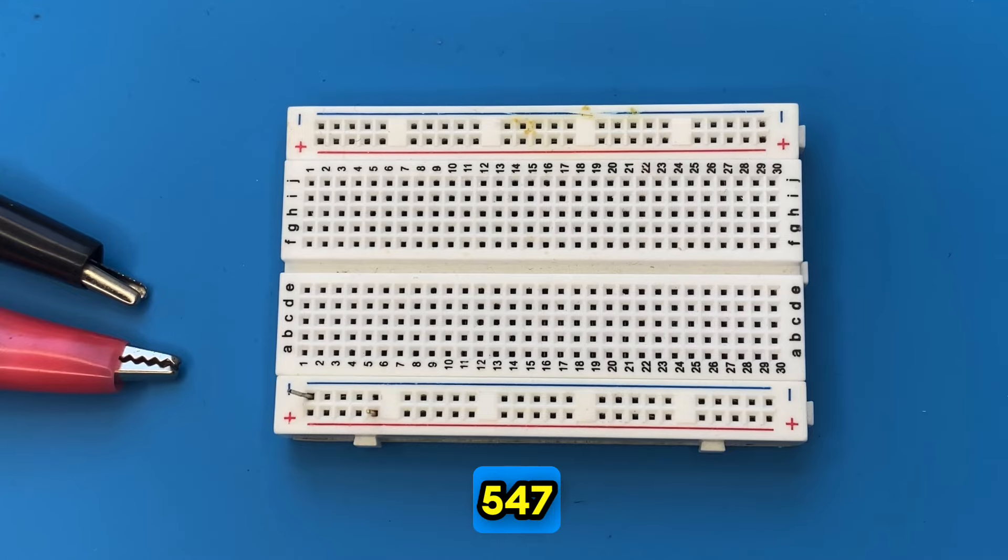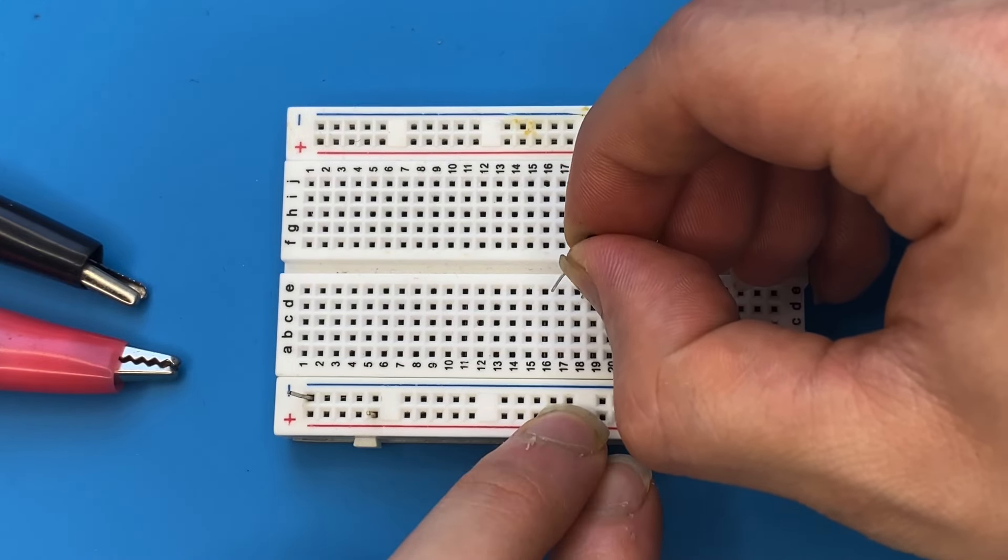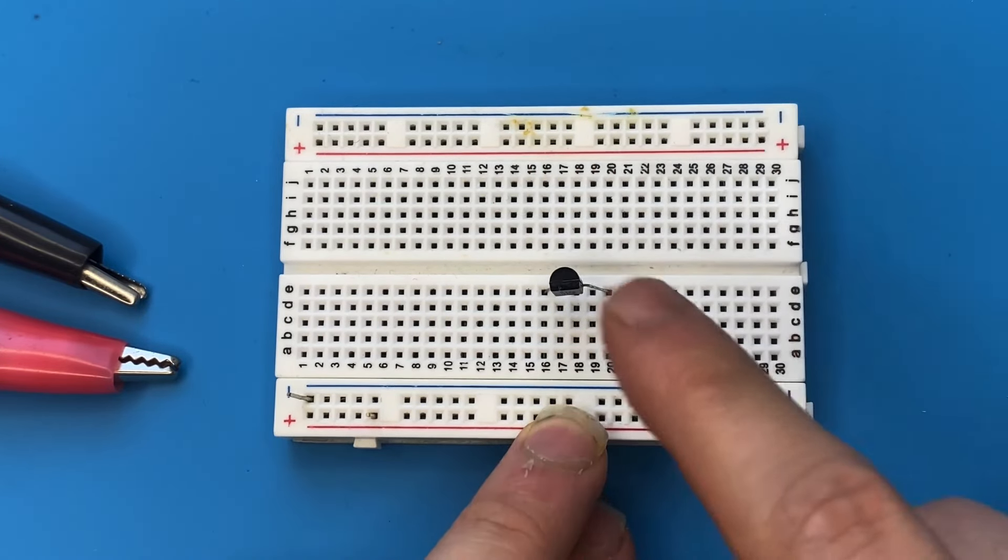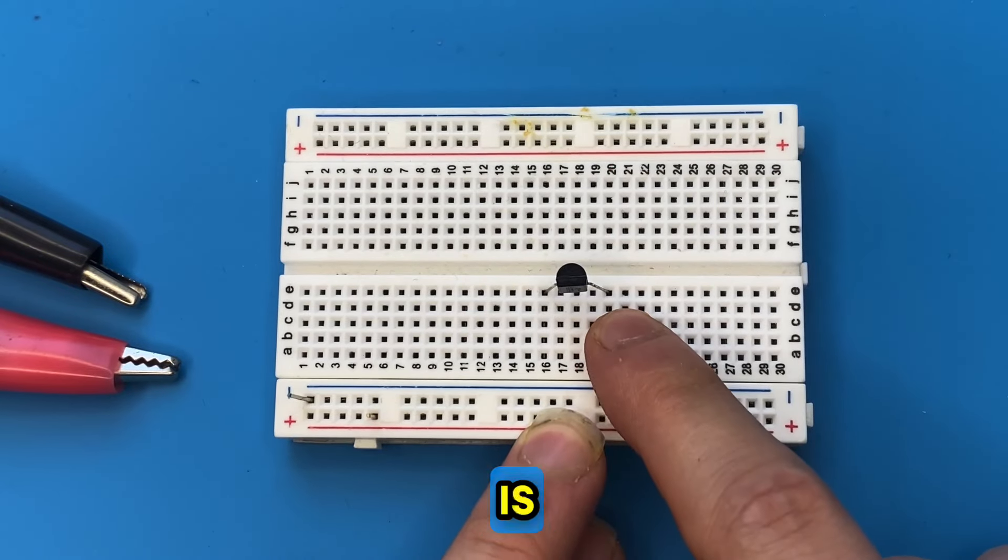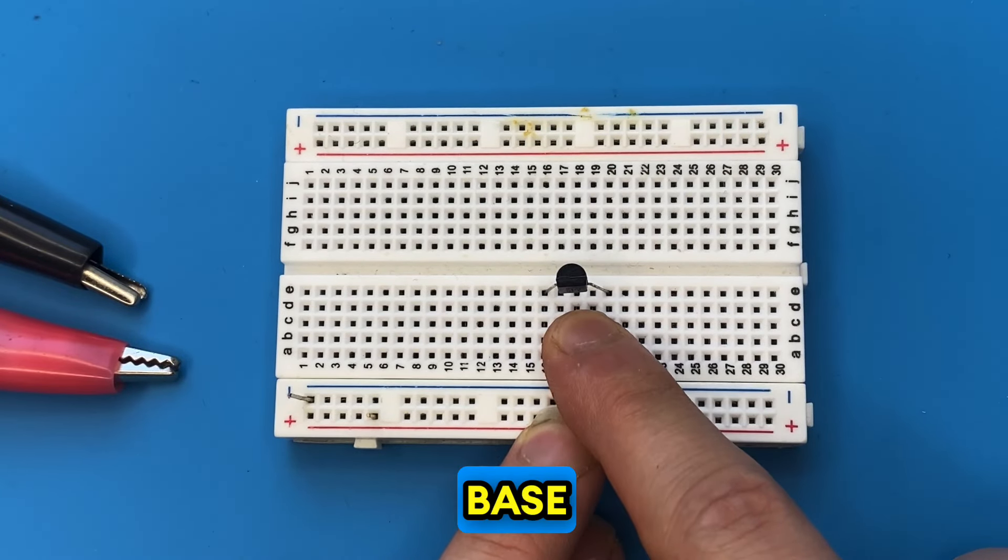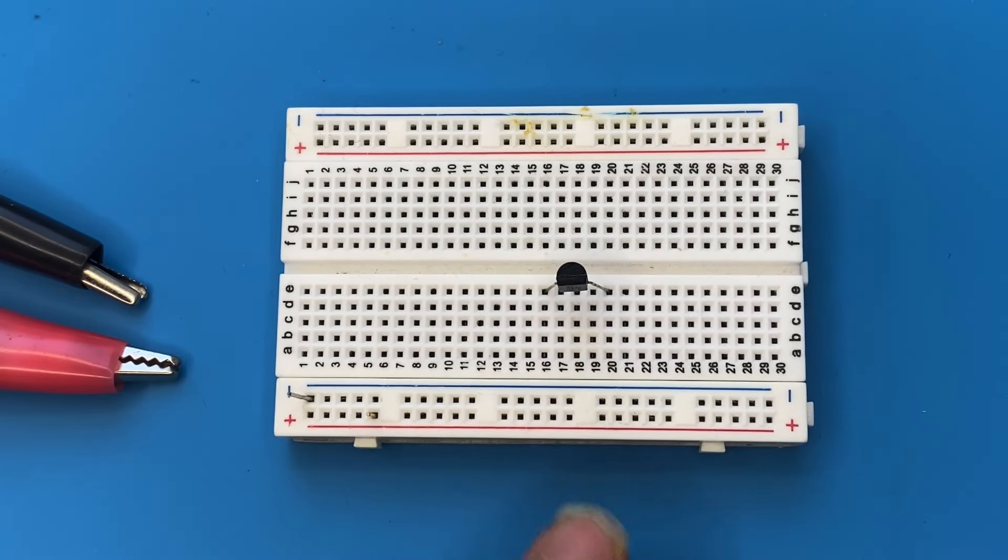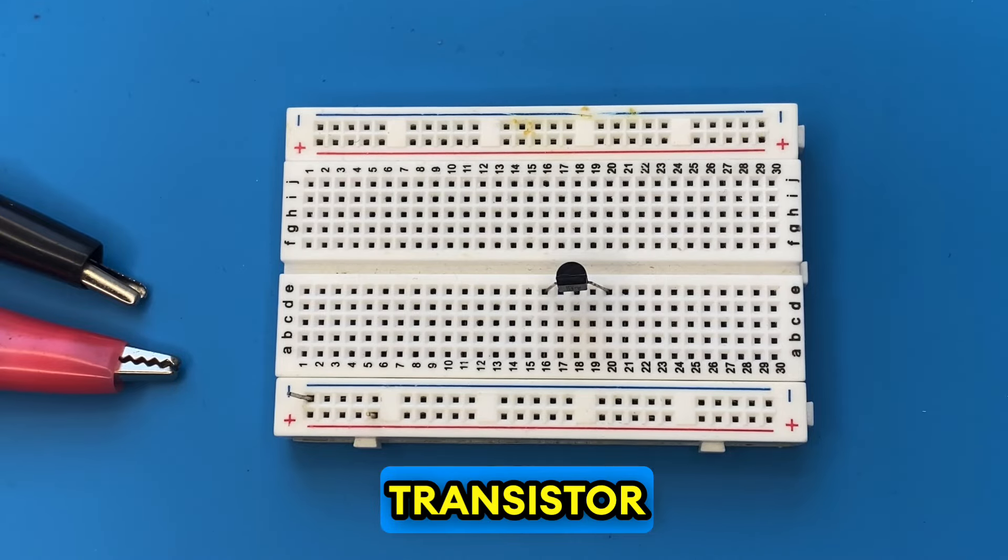Connect your BC547 transistor to the breadboard. The emitter pin is on the right, then you have base and collector. Let's connect the emitter of the transistor to ground.